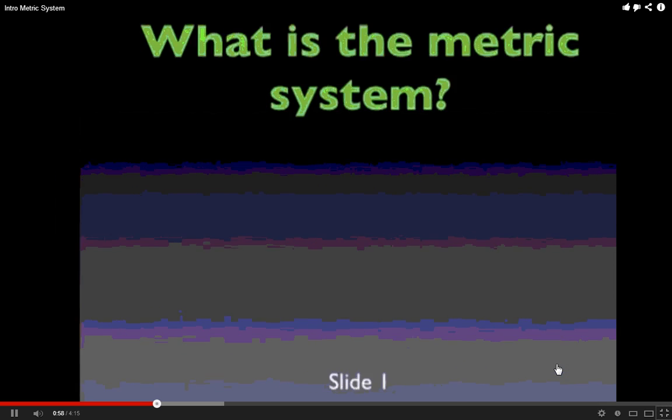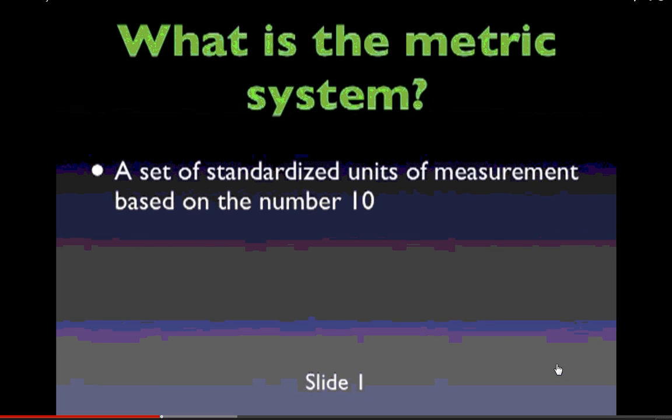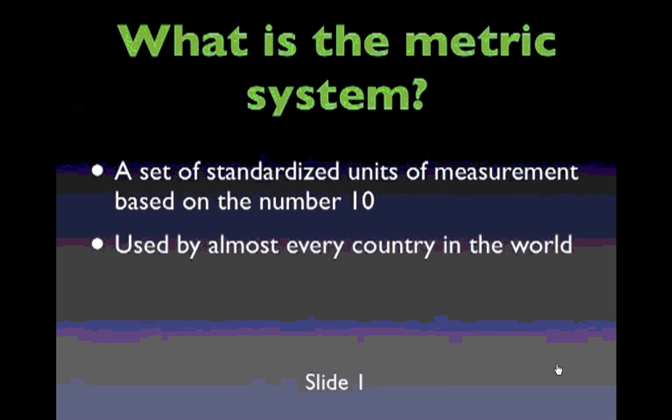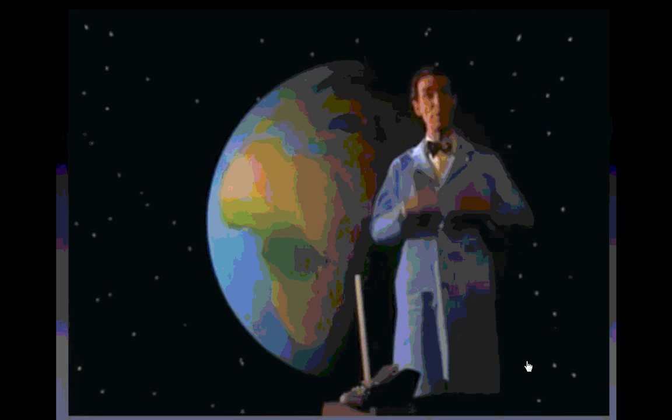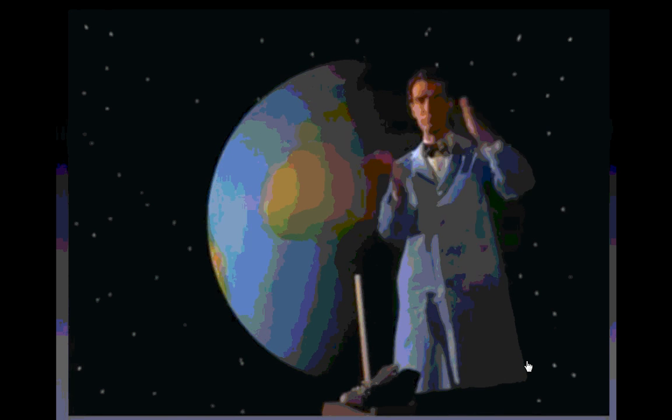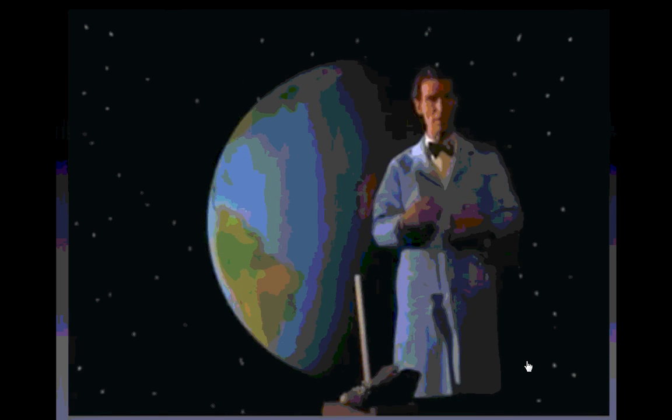The metric system is all about the number 10. It's a set of standardized units of measurement based on the number 10, used by almost every country in the world and by every scientist worldwide. We've always wanted a unit of measurement that would be the same for everyone, a standard.